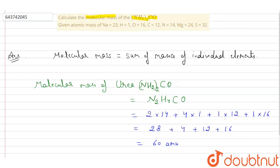So therefore, molecular mass of urea will be 60 amu. Thank you.